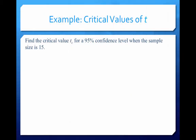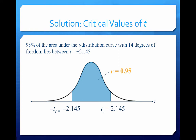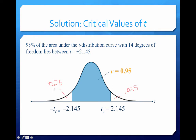Looking at a picture of what we just did: 95% is what lies between our critical t's, and that means there is 0.025 in the right tail and 0.025 in the left tail. That's why we used T.INV with 0.025 and our degrees of freedom of 14.